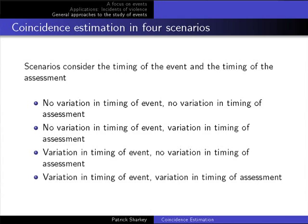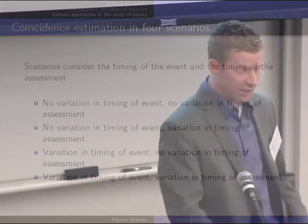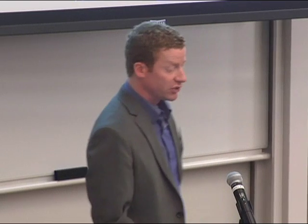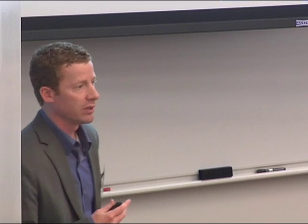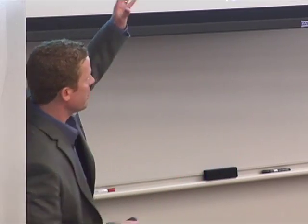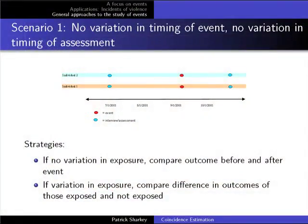Let me talk briefly about these four scenarios. The first scenario has no variation in the timing of the event and no variation in the timing of assessment — this is the weakest scenario for estimating the impact of the event. One example is the recent paper looking at the effect of the Obama election and inaugural acceptance speech on African Americans' test performance. If there's no variation in exposure, the strategy we're left with is to compare outcomes before and after the event. If there is variation in exposure — in this paper, the authors argued that whites should not be subject to a change in performance due to the positive image of Obama — then we can compare the difference in outcomes of those exposed and not exposed.